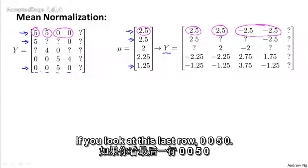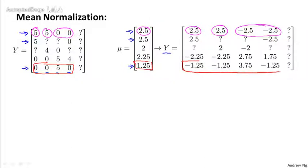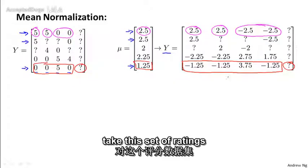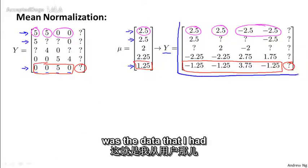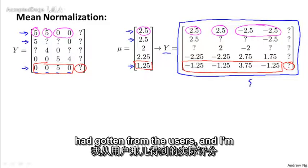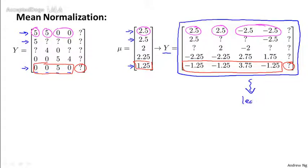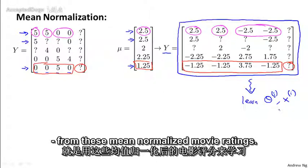So just one last example, if you look at this last row, the 0, 0, 5, 0, I'm going to subtract 1.25, and so I end up with these values over here. And of course the question marks stay at a question mark. And so each movie in this new matrix Y has an average rating of 0. What I'm going to do then is take this set of ratings and use it with my collaborative filtering algorithm.